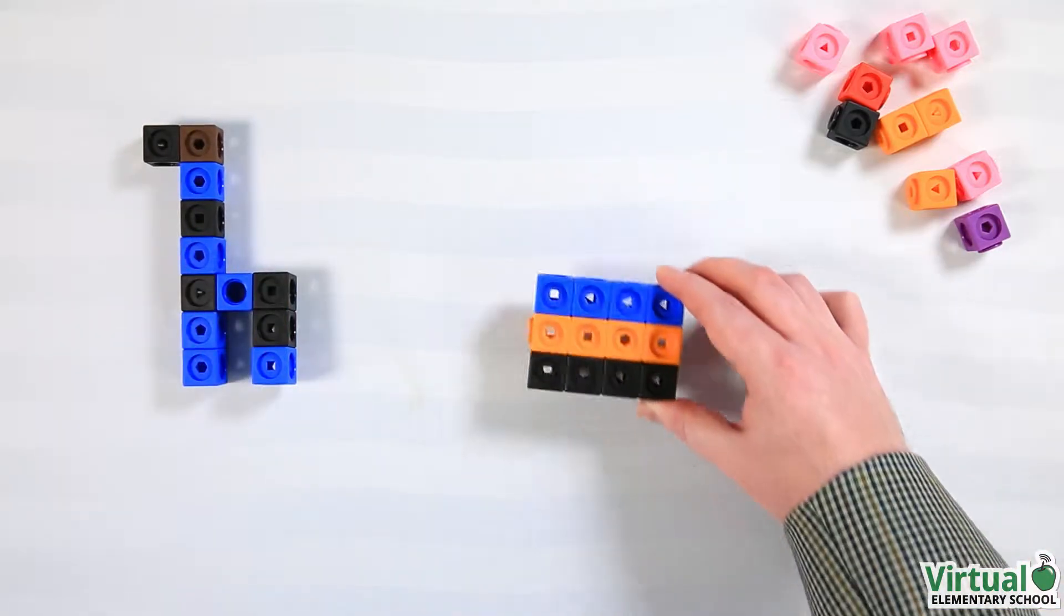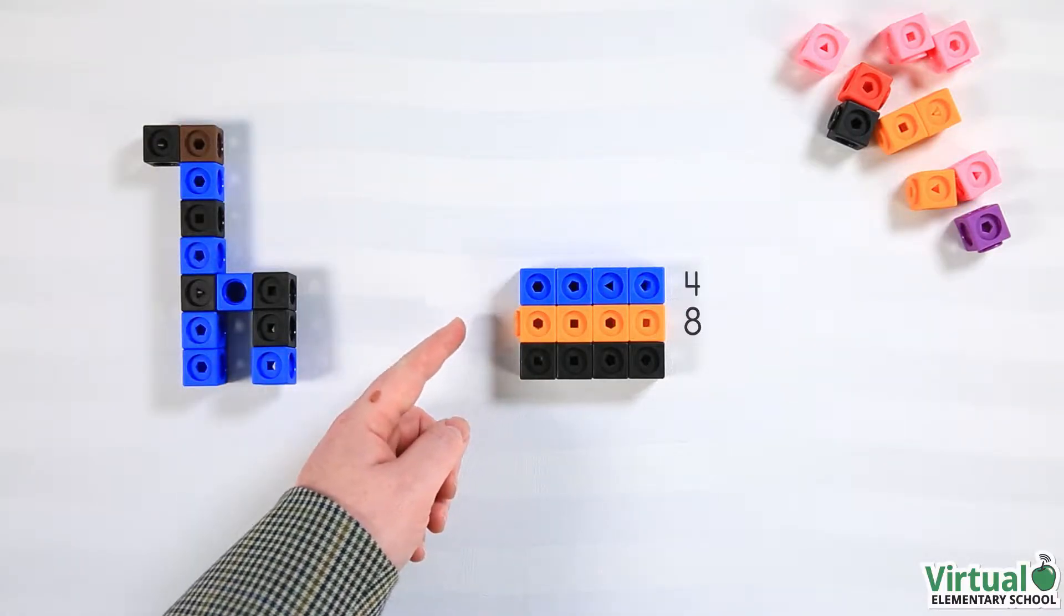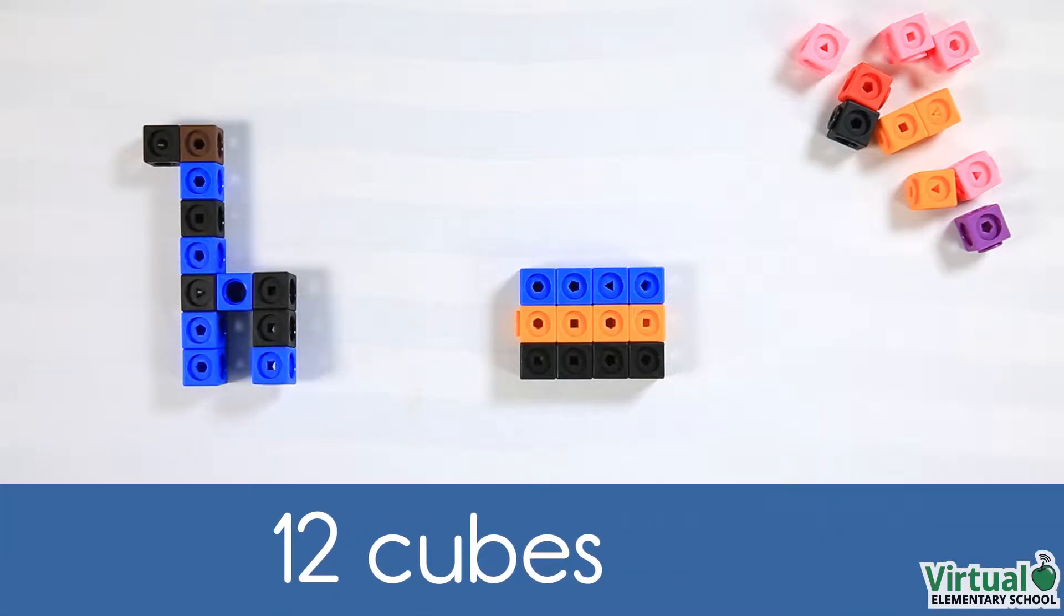What is the volume of this rectangular prism? We can count the cubes. Four, eight, twelve. This prism has a volume of 12 cubes or cubic units.